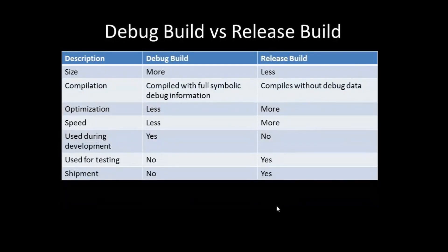Next: debug build versus release build. Many developers don't know the difference, so this is a very important topic. In a debug build, the size of your EXE or DLL will be more compared to a release build, because it is compiled with full symbolic debug information. A release build compiles without any debug data. When it comes to optimization, a debug build is less optimized compared to the release build, which is more optimized. Similarly, debug build speed is less whereas release build speed is more.